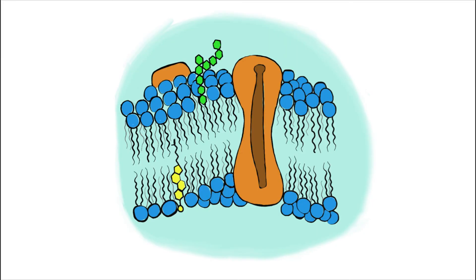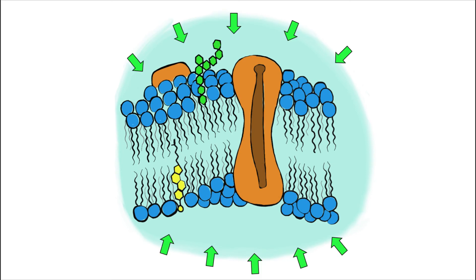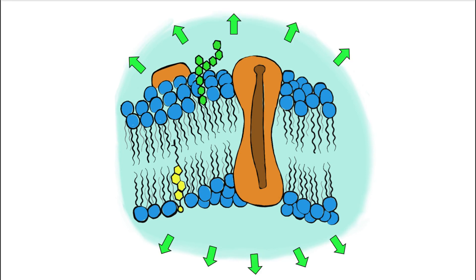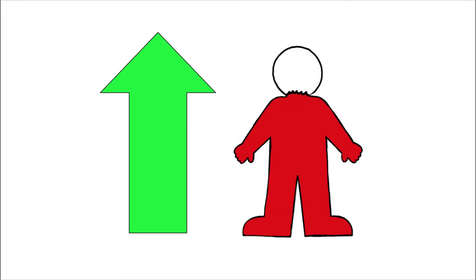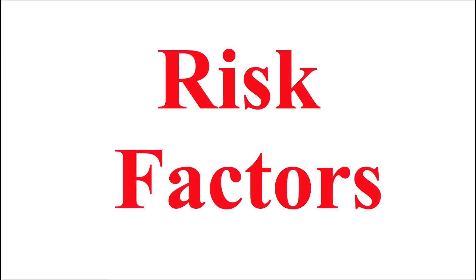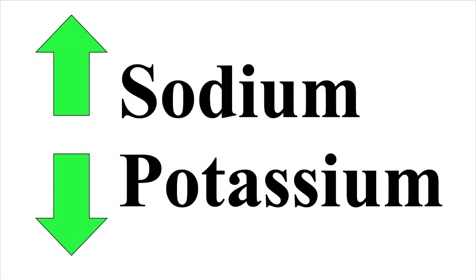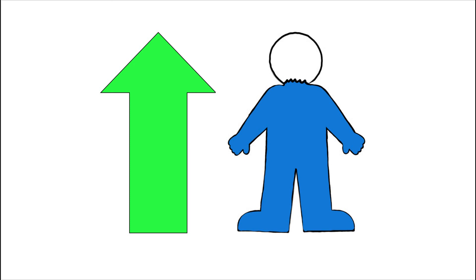In order for the regulation of blood pressure to occur, many factors need to move in and out of cells, which involves crossing the cell membrane. Homeostasis is disrupted in hypertensive patients as their blood pressure is elevated above normal ranges. The cause of hypertension is not well understood, but a high-sodium, low-potassium diet is one known risk factor, suggesting that abnormal sodium and potassium levels may increase extracellular fluid volume and disrupt homeostasis.